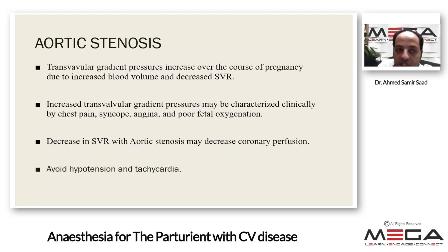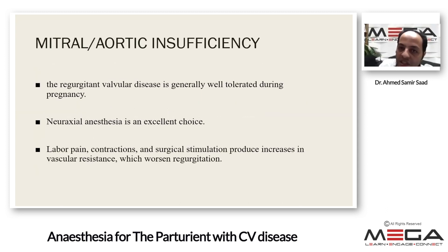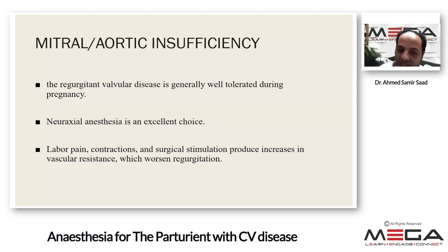For aortic stenosis, trans-valvular gradient pressure increases over the course of pregnancy due to increased blood volume and decreased systemic vascular resistance. Increased trans-valvular gradient may cause chest pain, angina, and poor fetal oxygenation. Decreased systemic vascular resistance in aortic stenosis may decrease coronary perfusion. Avoid hypotension and tachycardia. For mitral and aortic insufficiency, these conditions actually improve with pregnancy and are usually well tolerated. Neuroaxial anesthesia is an excellent choice as it decreases systemic vascular resistance.